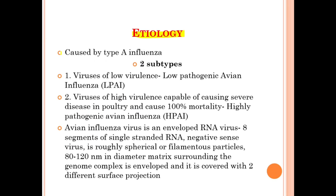Moving on, we will discuss the etiology. Avian influenza is caused by type A influenza virus, which has two subtypes: viruses of low virulence, called low pathogenic avian influenza (LPAI), and viruses of high virulence capable of causing severe disease in poultry with 100% mortality, called highly pathogenic avian influenza (HPAI). The avian influenza virus is an enveloped RNA virus having 8 segments of single-stranded negative-sense RNA, with spherical or filamentous particles of about 80 to 120 nanometers in diameter, with a matrix surrounding the genome complex and covered with two different surface projections.